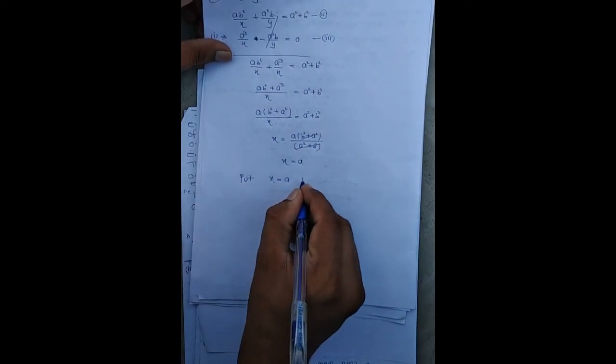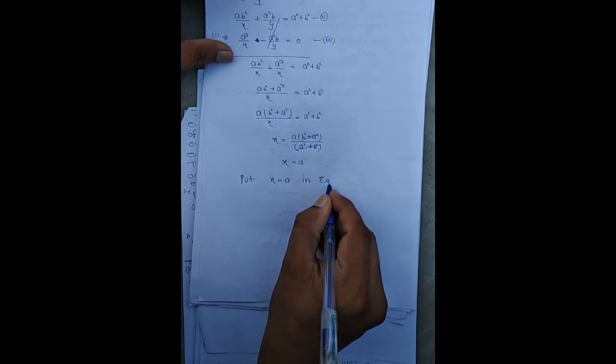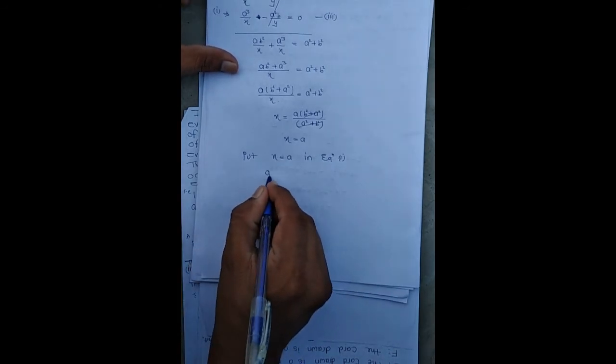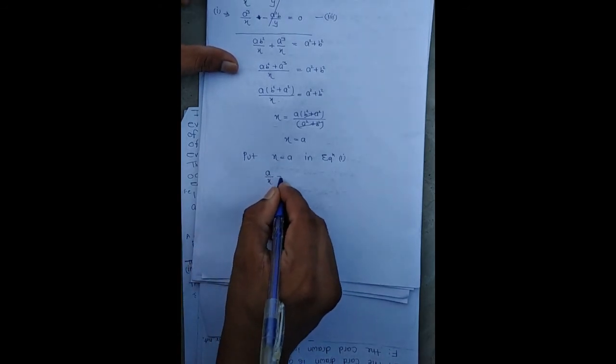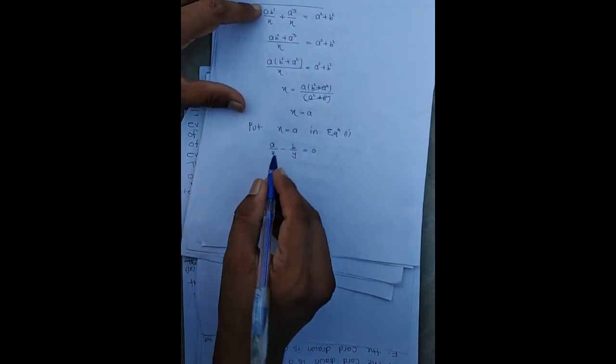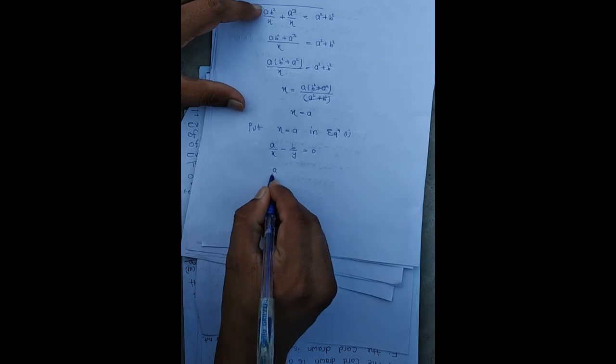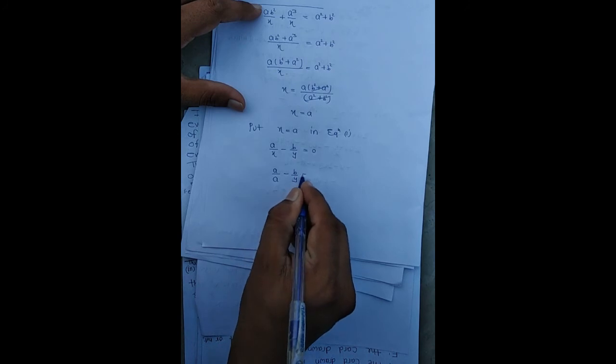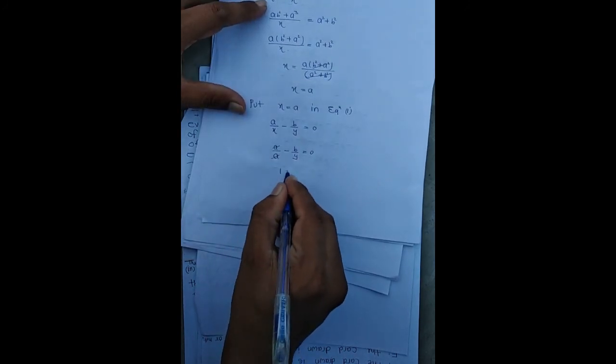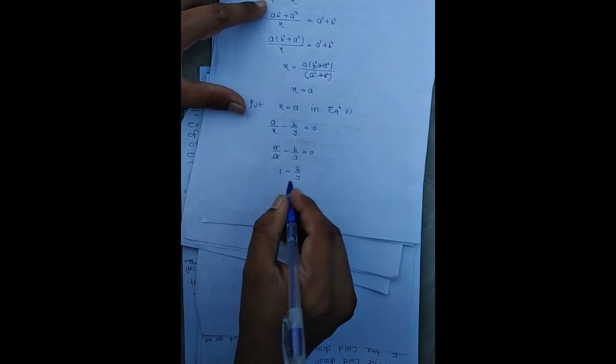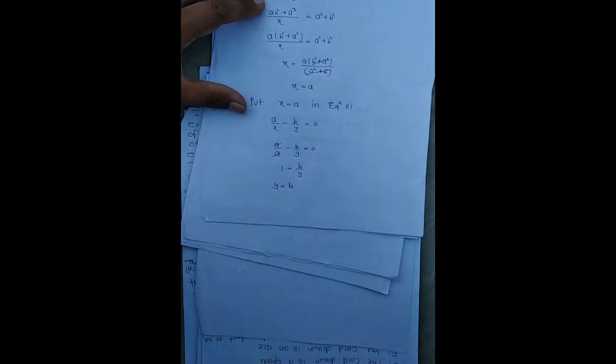So the value of x is a. Now we have the value of x. We can put x back into the original equation. From equation 1: b/y minus b/y, shift to RHS, then y equals b, and it is the solution.